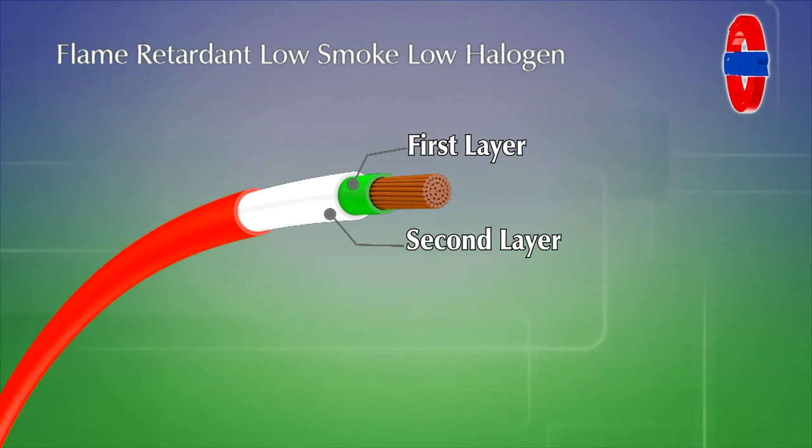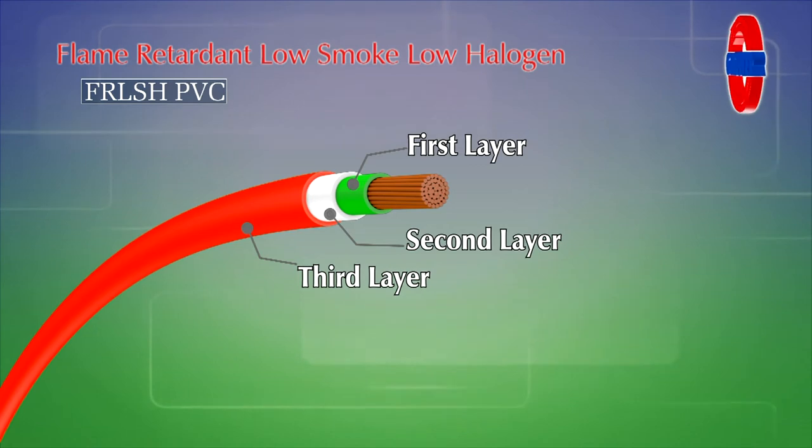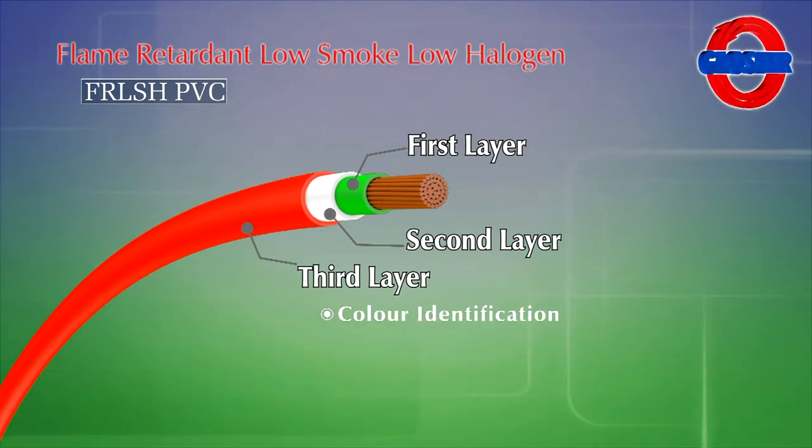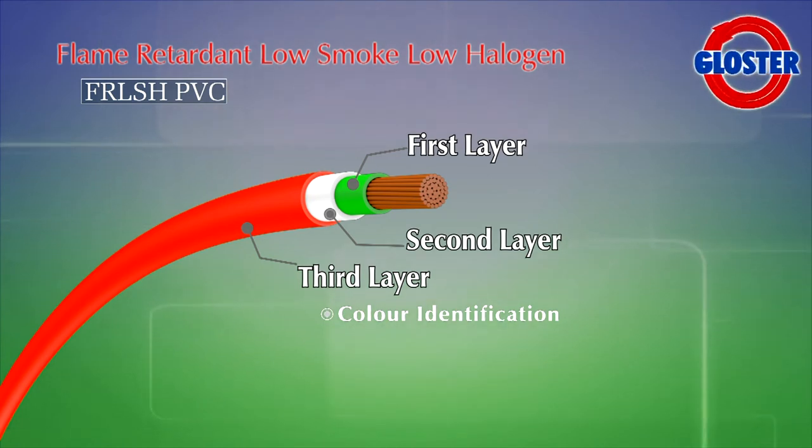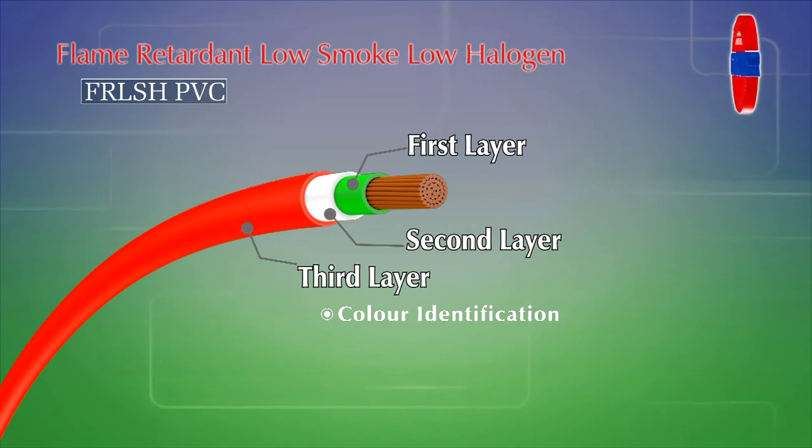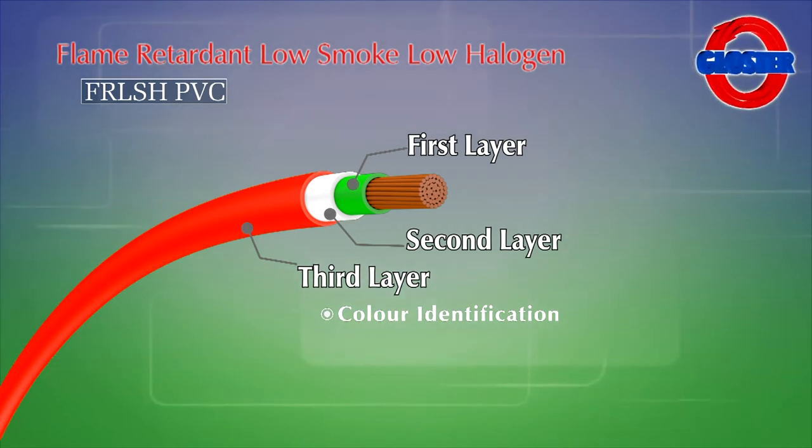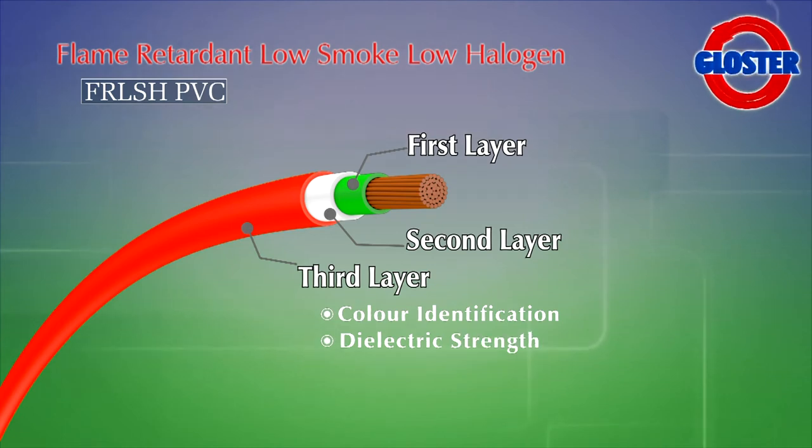Specially formulated in-house colored flame retardant, low smoke, low halogen PVC is used for third layer of insulation to ensure clear color identification and complete safety. Color pigment is not mixed with insulation. If color and insulation is mixed together, then properties of the insulation get diluted and insulation dielectric strength is likely to get reduced.